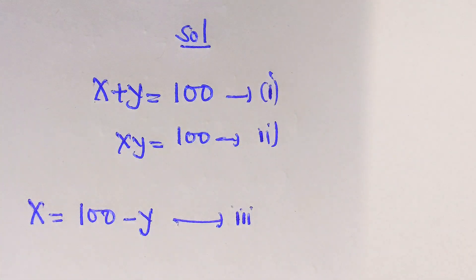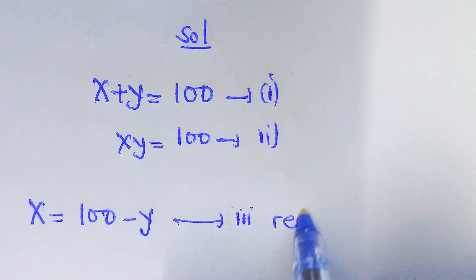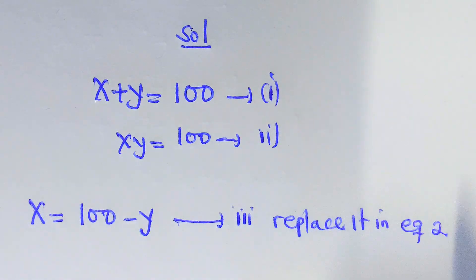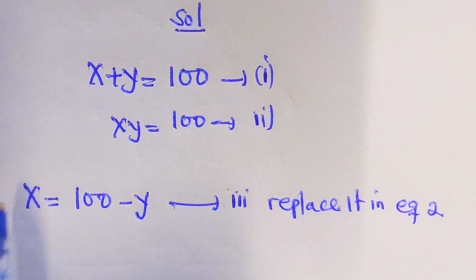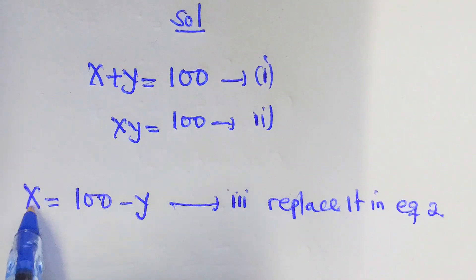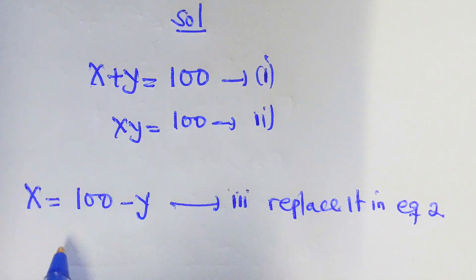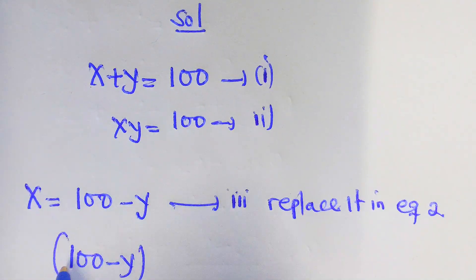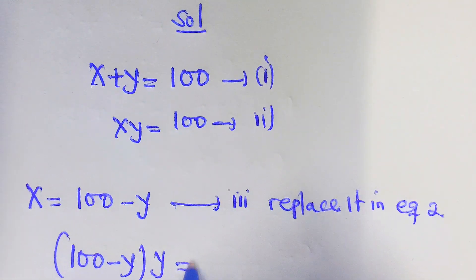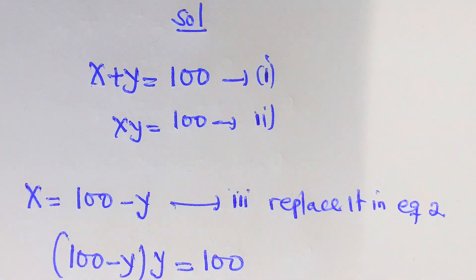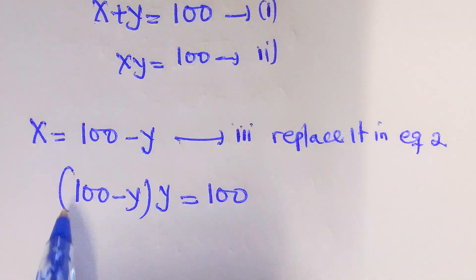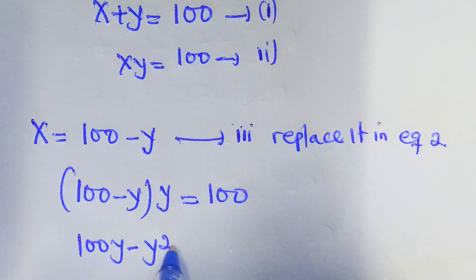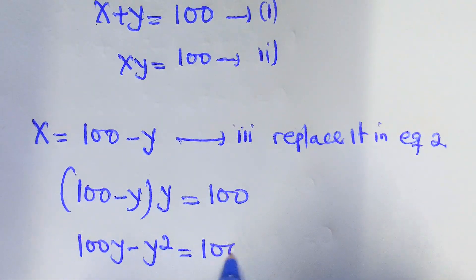And we are going to replace equation 3 in equation 2. We have x right here, so we shall say 100 minus y, times y, equal to 100. And expanding: 100y minus y squared equal to 100.